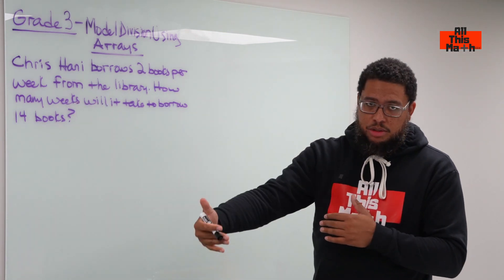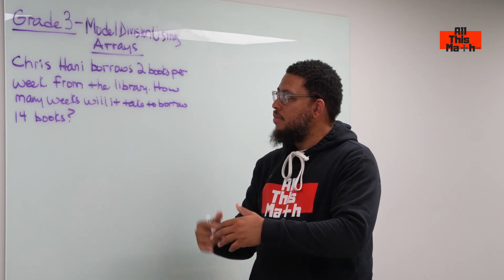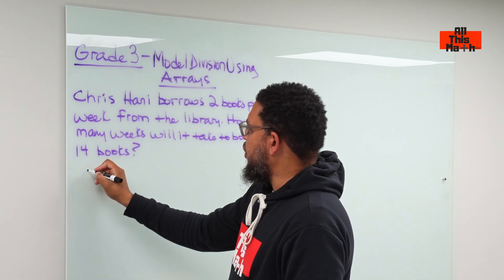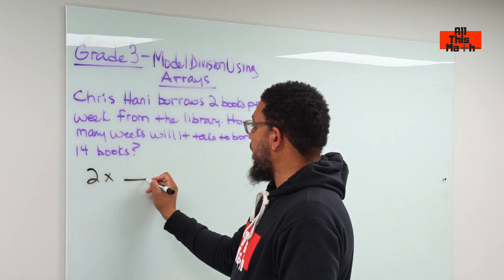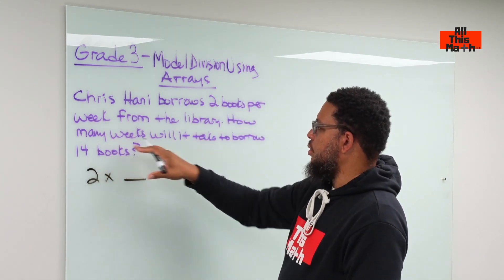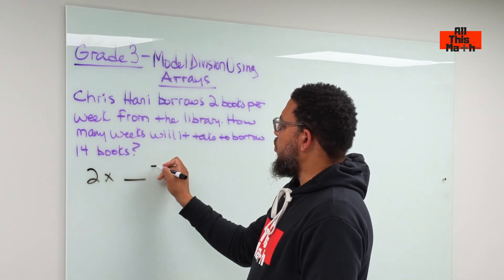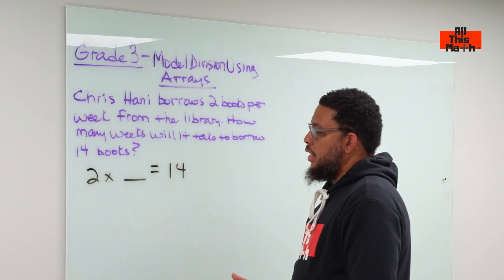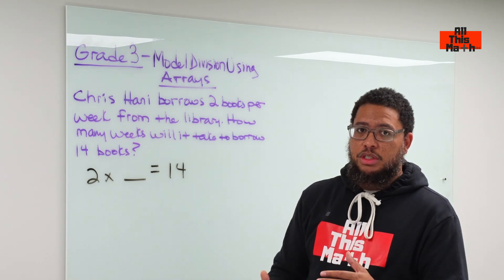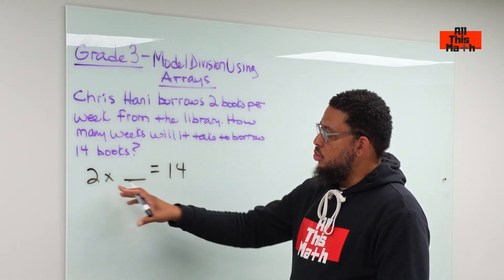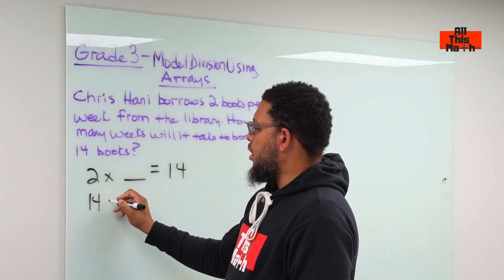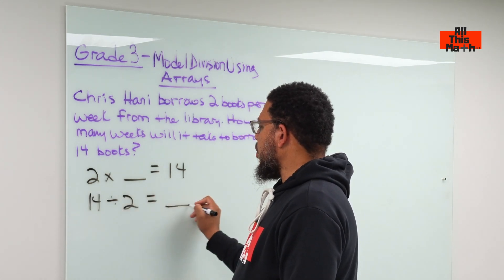So 14 books would be the total product of books, but two books are being borrowed per week. Think of a multiplication problem: two times blank, because two is the number of books per week but we don't know the number of weeks. That blank would be equal to 14. We need to understand the relationship between multiplication and division — they are opposite or inverse operations.